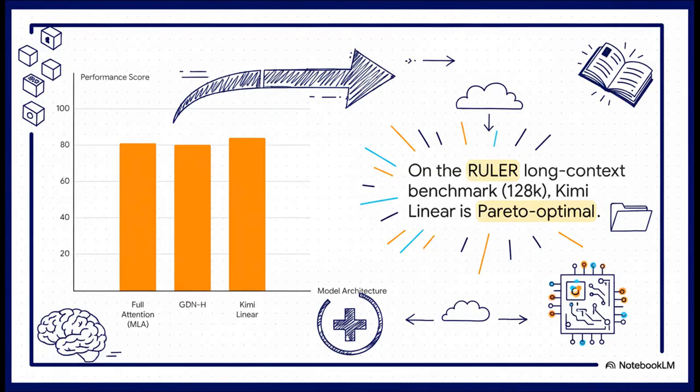Take a look at this chart. These are results from the RUL benchmark, which is a really tough test for these long-context models. See Kimi Linear, that bar on the far right? It's scoring an 84.3, clearly outperforming the standard full attention model. So it's not just more efficient, it's actually better at the task.